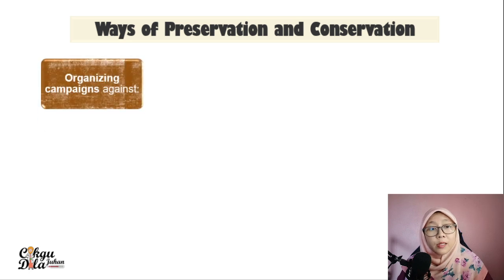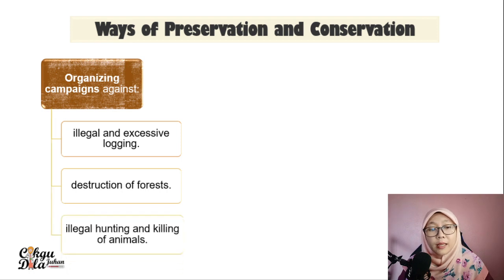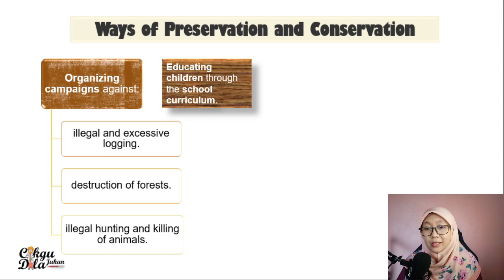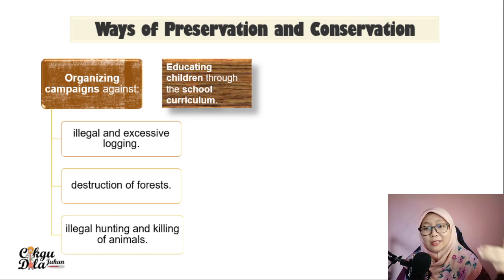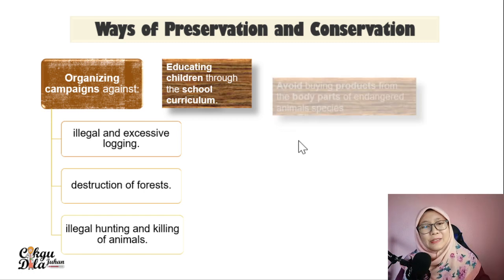The first way is we can organize a campaign against illegal and excessive logging, destruction of forests, and illegal hunting and killing of animals. We can also educate our children through the school curriculum, like what we are doing right now — this is part of the school curriculum.